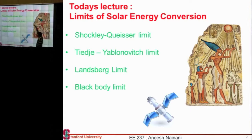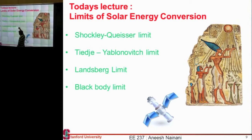There are different limits. The most prominent one is the Shockley-Queisser limit. You heard from Eli on Monday — he also contributed and his limit is called the Yablonovitch limit, or TJ Eli's limit. Then there are two other things which come from thermodynamics, and we'll discuss those today as well.